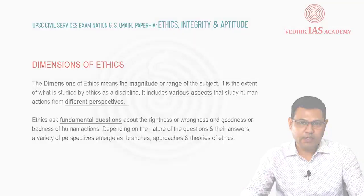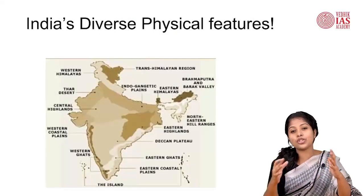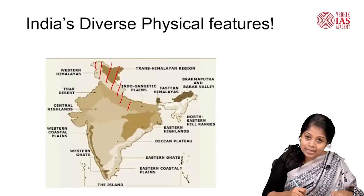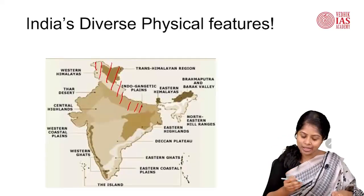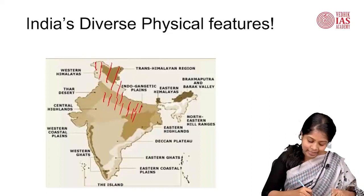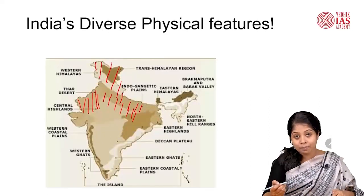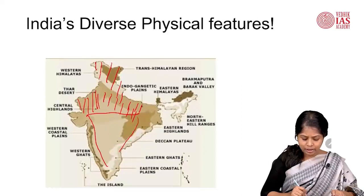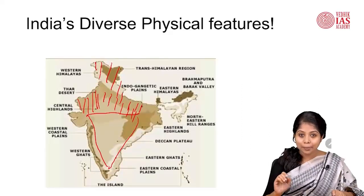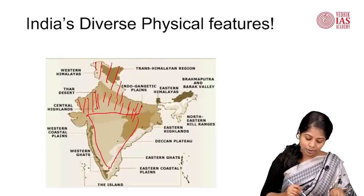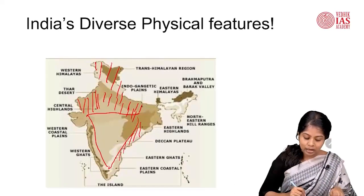India has a diverse range of physiographic divisions. In the northern region, you can see the Himalayan mountains. South of the Himalayan mountains, you can see the northern plains. To the western region, you can see the Indian desert, also known as the Great Indian Desert or the Thar desert. Towards the south of that, in almost a triangular region, you can see the Indian Peninsular Plateau. Towards the right and left of India's Peninsular Plateau, you can also see the coastal plains.